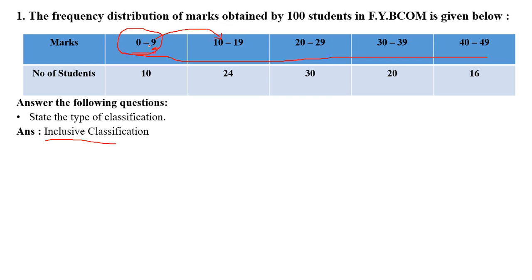This frequency distribution is inclusive classification because the upper limit of a class is included in the same class itself and not in the next class. You can see that after 9 there is immediately 10 — so 9 is not included in the second class, it is included in the first class only. In short, when the classes are not continuous — after 9 comes 10, after 19 comes 20 — it means inclusive classification.